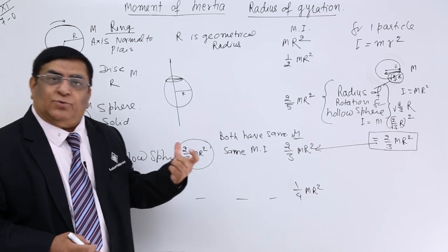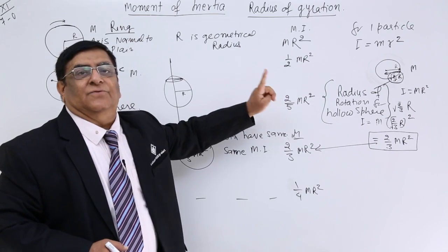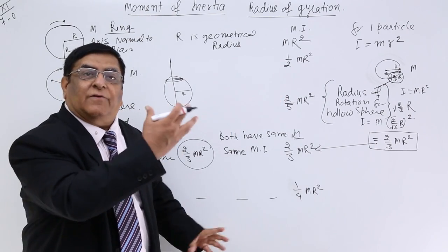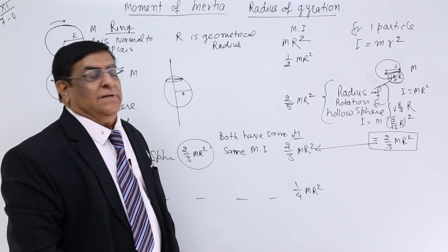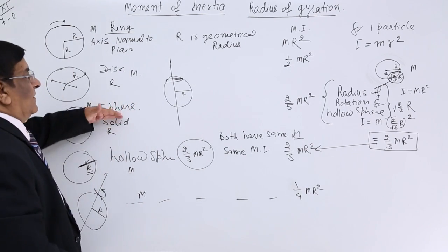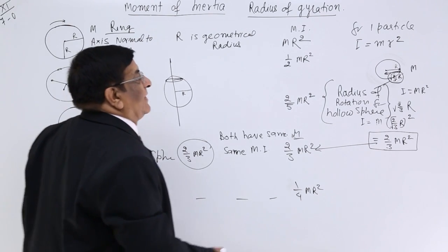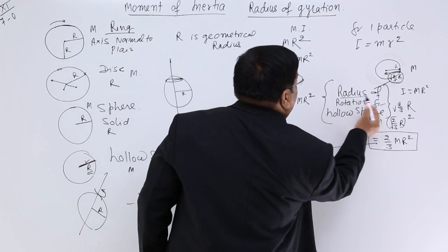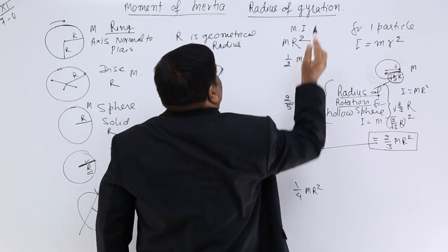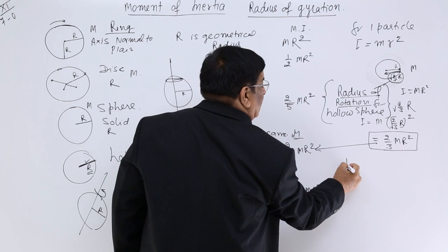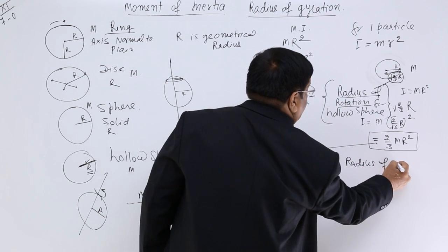There are two types of radius: one is geometrical and one is radius of rotation. This radius of rotation is different for different shapes. We have given it a name — for rotation we use the word 'gyration', so we call it radius of gyration.